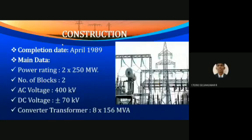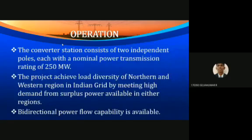Construction-wise, the station has two blocks, each carrying a power of 250 megawatts. The AC voltage rating is 400 kilovolt and the DC voltage rating is plus or minus 70 kilovolt. The station has eight converter transformers, each with a rating of 156 megavolt-ampere. This project was completed in April 1989.